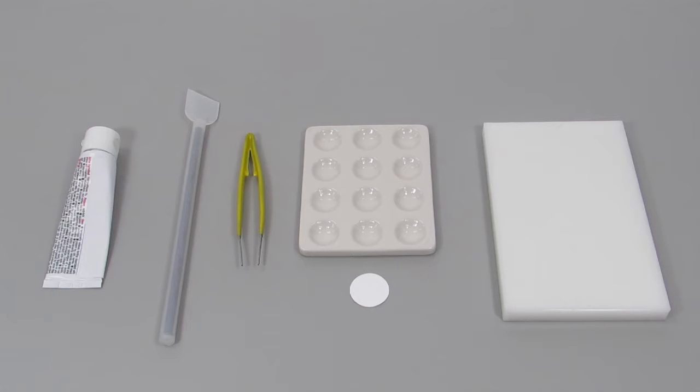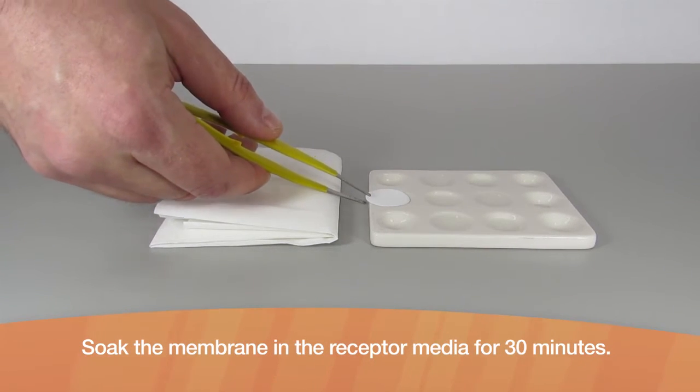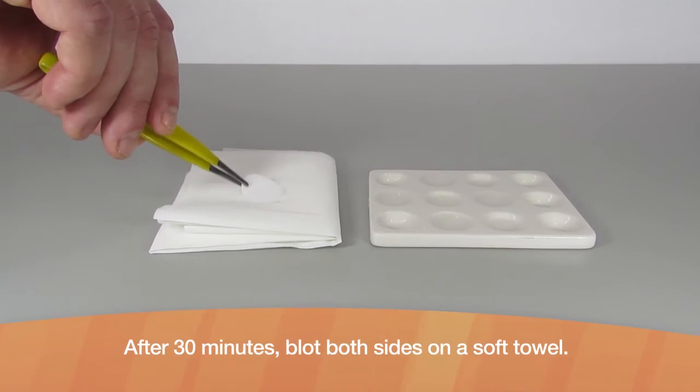Spot plate, membrane block. Soak the membrane in the receptor media for 30 minutes. After 30 minutes, blot both sides on a soft towel.